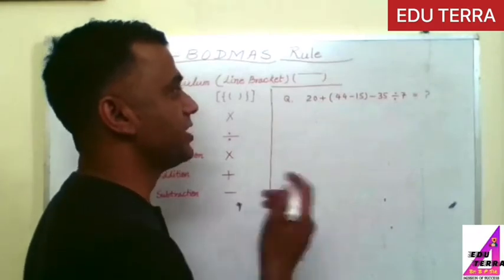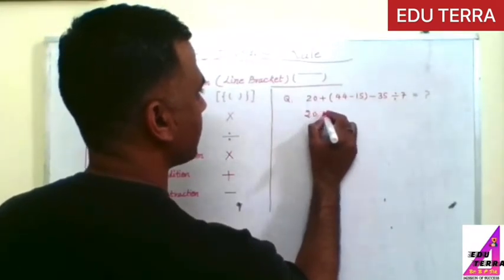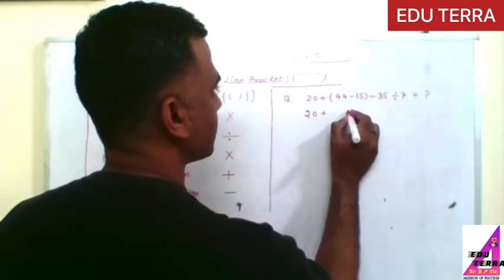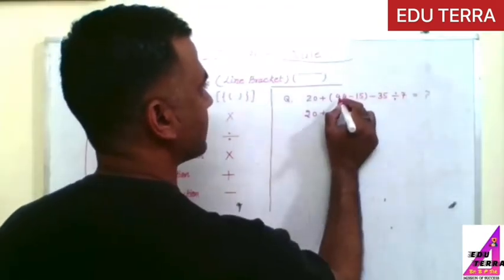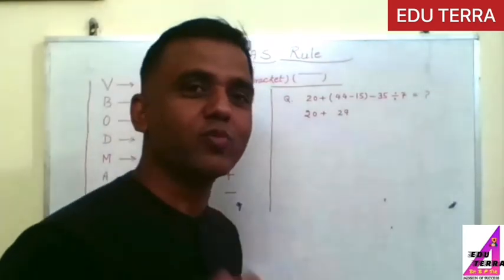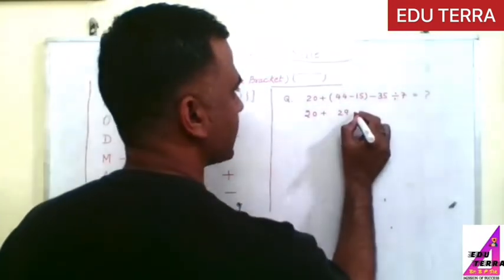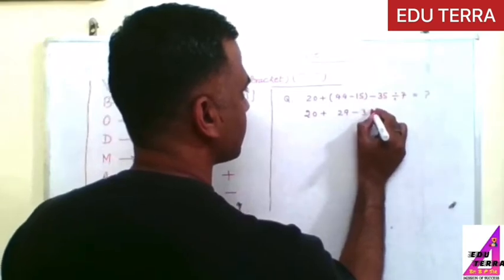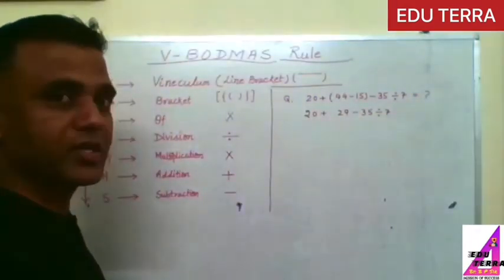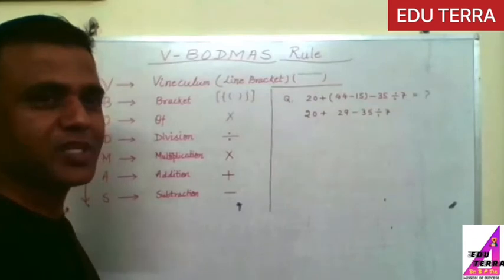Now let's see how to solve. Vinaculum bracket is not given for this question, so after that bracket is given, so it means we have to solve the first 44 minus 15. So what will come? 20 plus, 44 minus 15 is 29. The addition and subtraction you should do more and more practice for quick and correct answer. So bracket solved, now minus 35 divided by 7.